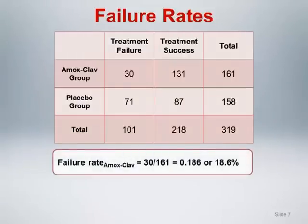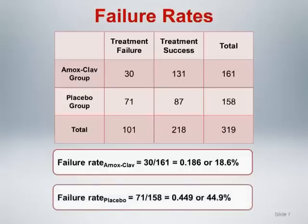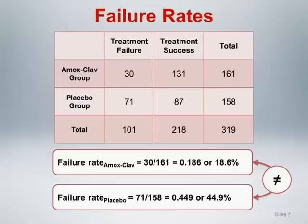Of primary interest are the row percents describing the treatment failure rate in each intervention arm. The failure rate in the Amox-Clav group is 30 out of 161, equal to a proportion of 0.186 or 18.6%. The treatment failure rate in the placebo group is 71 out of 158, equal to a proportion of 0.449 or 44.9%. A difference in failure rate of approximately 26% is practically important. The chi-square test of homogeneity can be used to determine whether this difference is statistically significant.